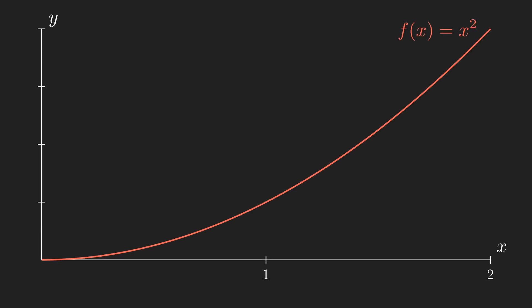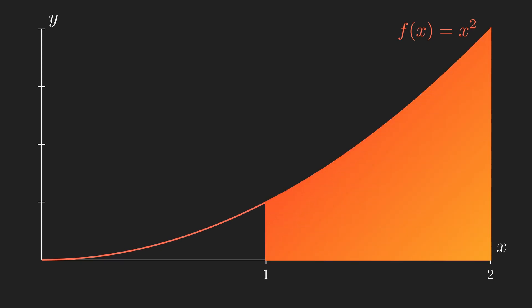Let's apply the idea of splitting up a shape into smaller pieces to a different problem, the area under a curve. Let's see if we can find the area under the curve f of x equals x squared between the points x equals 1 and x equals 2.